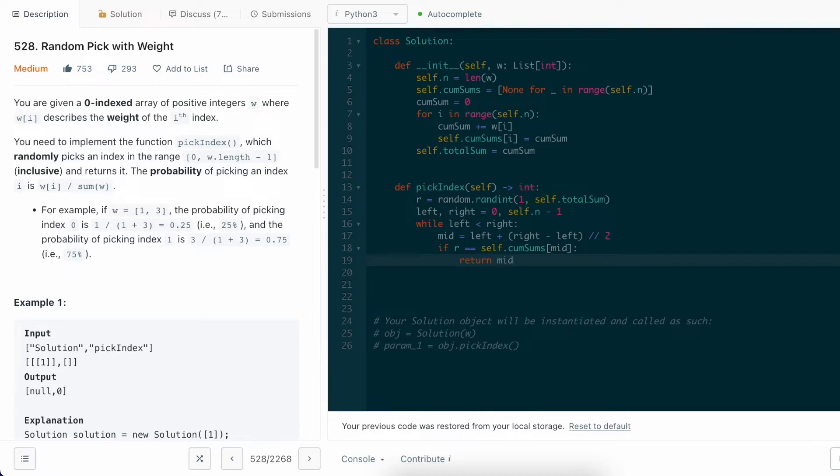Now, there are three possible cases. First, if r, the random integer we picked, is equal to the cumulative sum of index at mid, then we return mid.